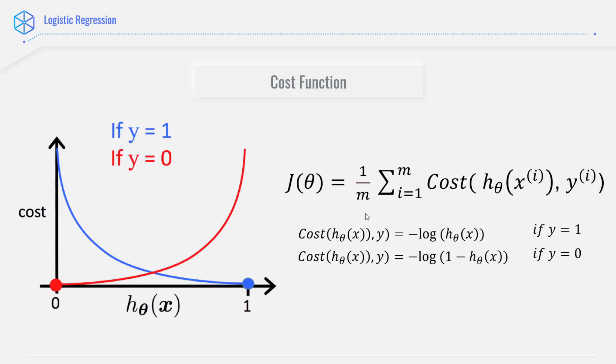Hence, instead of mean squared error, we use this particular cost function. The name of this is cross entropy. It is also known as logarithmic loss.